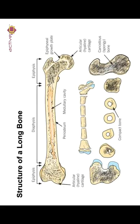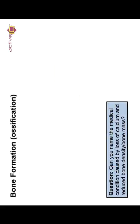Look at the structure of the long bone. You've got the epiphysis, which is the end of the bone, and the diaphysis, which is that long shaft that goes all the way through the middle. You've got a periosteum that runs around the outside, and as you can see, it's broken down into various pieces.